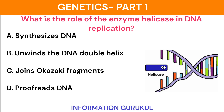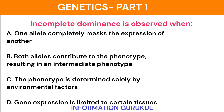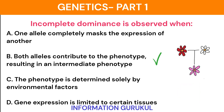What is the role of the enzyme helicase in DNA replication? It unwinds the DNA double helix. Incomplete dominance is observed when both alleles contribute to the phenotype, resulting in an intermediate phenotype.